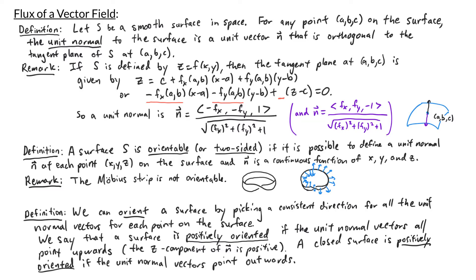So if a surface is orientable, we can orient it — meaning we can pick a consistent direction for all of the unit vectors at each point on the surface. We say that a surface is positively oriented if the unit normal vectors all point upwards, meaning the z-component of n is positive. Now it may not always be possible to pick unit normal vectors that all point upwards — for example, on a sphere, some will point upwards and some will point downwards. So for closed surfaces like the sphere, we say it is positively oriented if the unit normal vectors all point outwards.